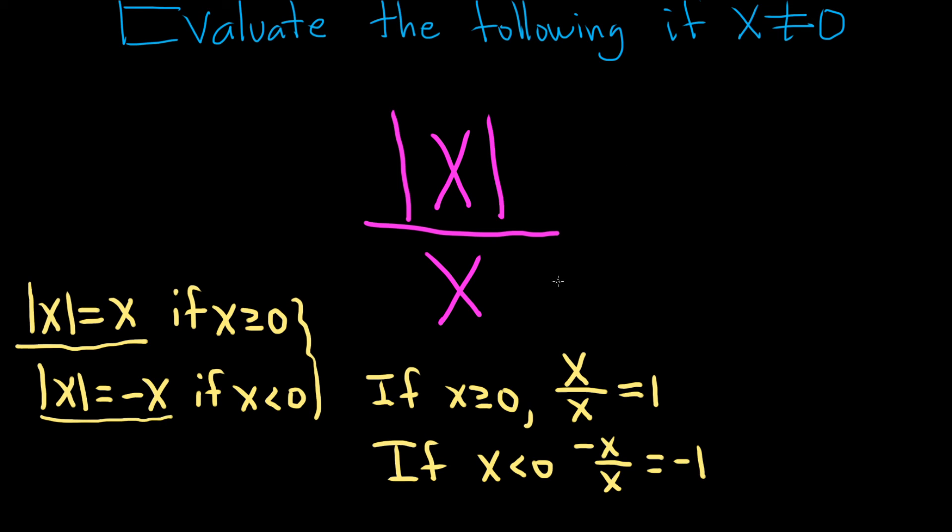So we have two possible answers. If we want, we can write this as a nice piecewise function. We put an equal sign and we put these fancy brackets. And we know that it's equal to 1 if x is greater than or equal to 0, and it's equal to negative 1 if x is less than 0. I hope this video has been helpful.